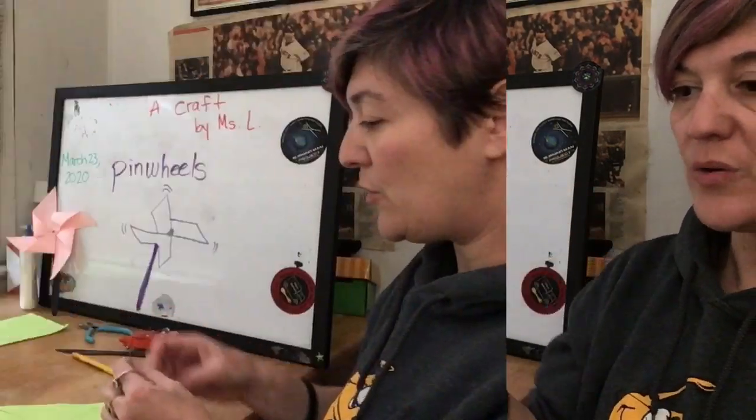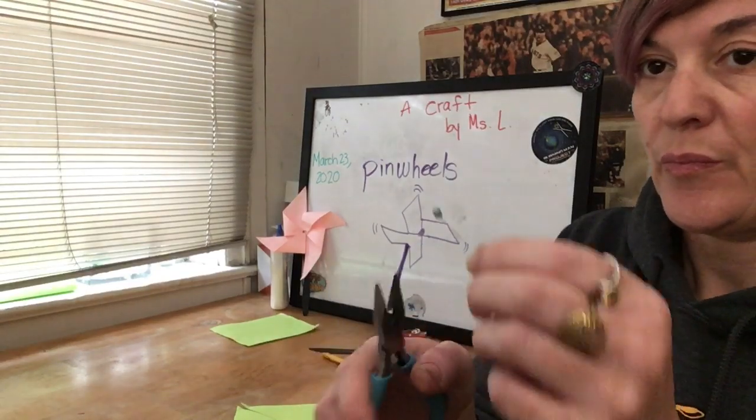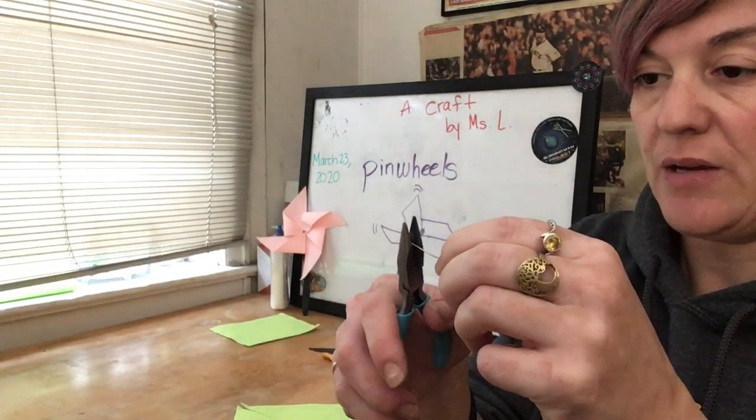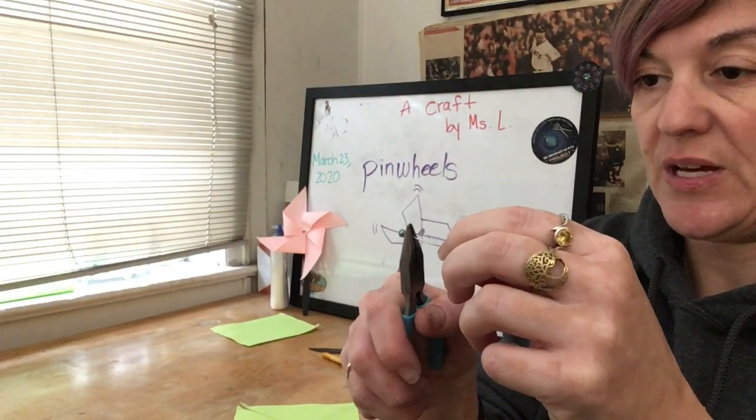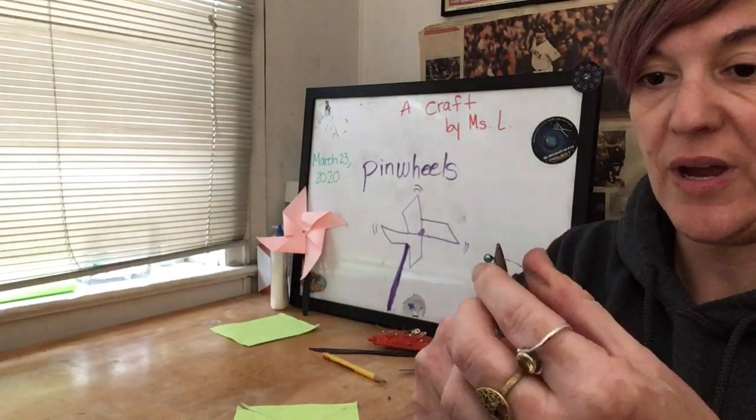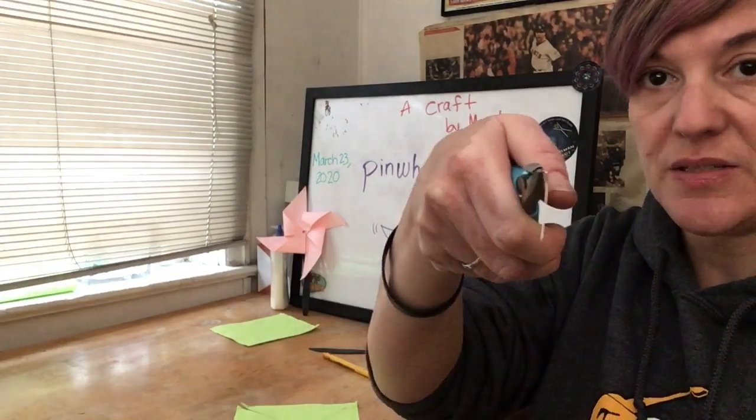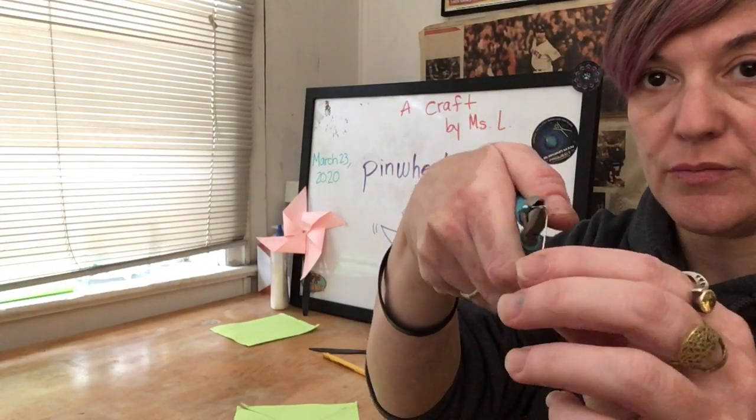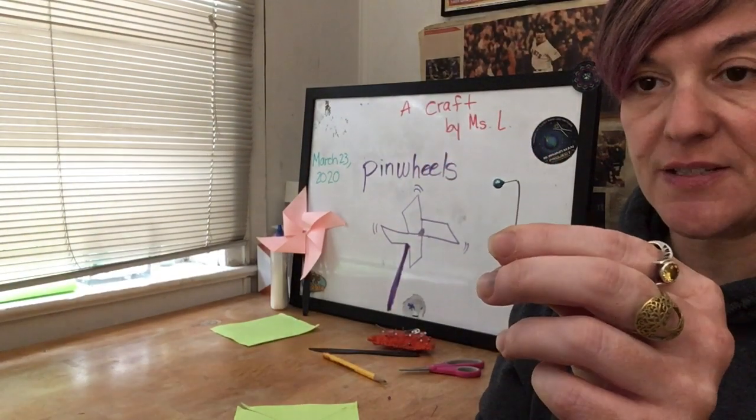Now you are ready to bend. Clip the pinhead just below the pinhead in your pliers and then you're going to bend away from you so that it makes a point going down. When you're finished it should look like this.